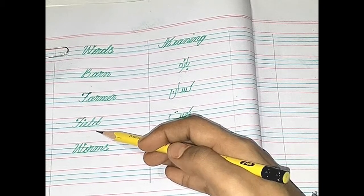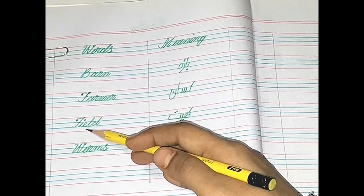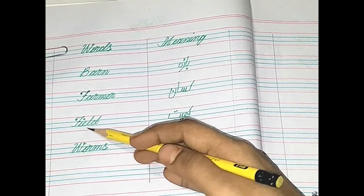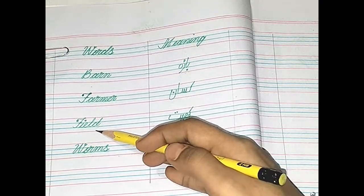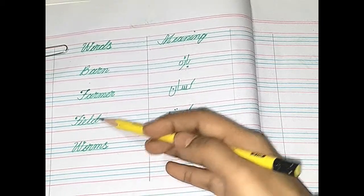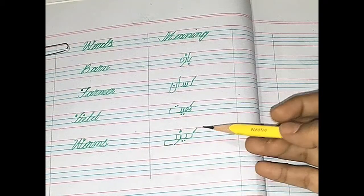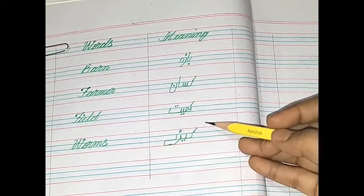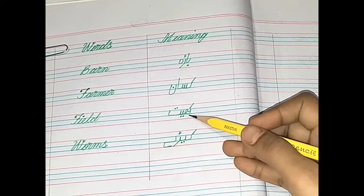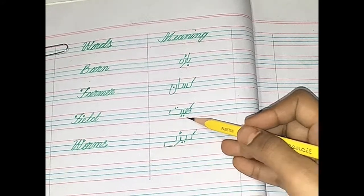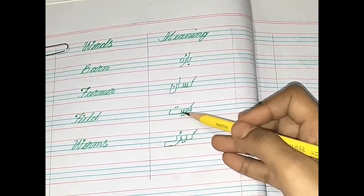Number 3: F-I-E-L-D. Field. Field means Kaaf, ye, te, khe — field.